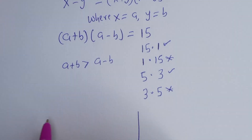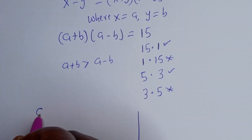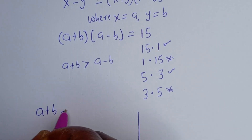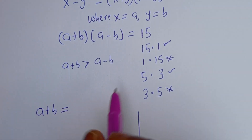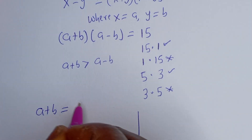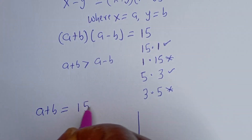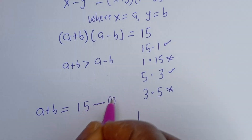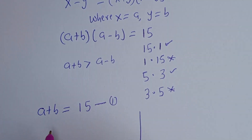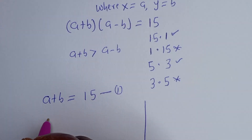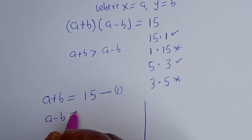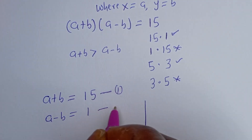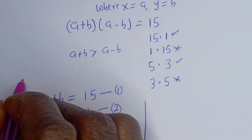For the first case: a + b = 15 — let's call this equation 1. Then a - b = 1 — let's call this equation 2.